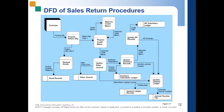The credit manager evaluates the circumstances of the return and makes a judgment to grant or disapprove credit — assessing whether the customer's reason for returning the goods is reasonable. The manager then returns the approved credit memo to the sales department. Once the credit memo is approved and comes back from the credit department, it is time to update your records.